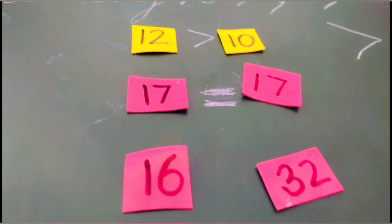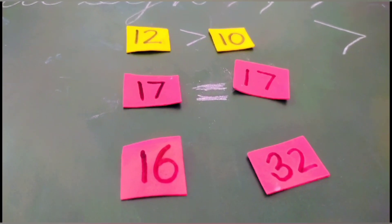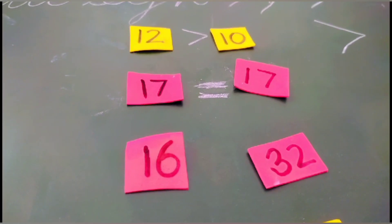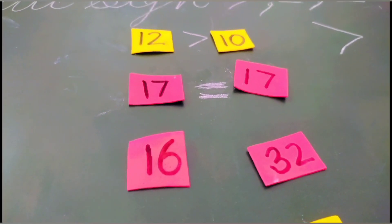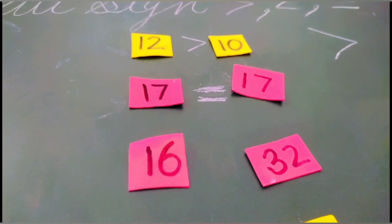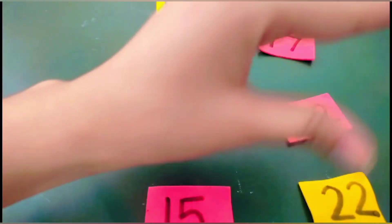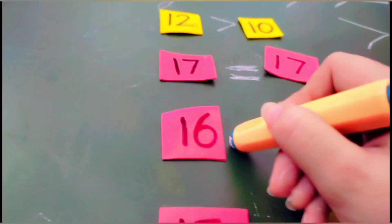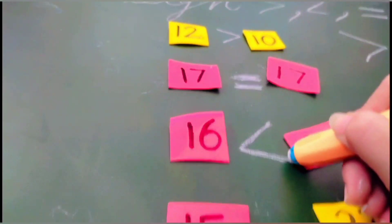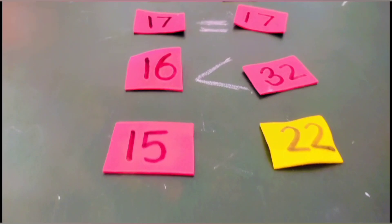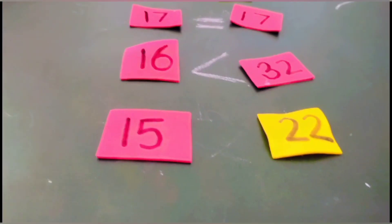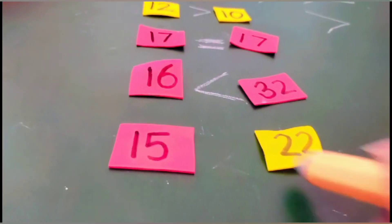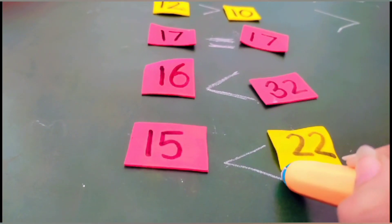Now next we have 16 and 32. 16 and 32. Now we will open our hand on the left side like this. We will make V like this. Next, we have 15, 22. What we will do? Which one is greater? This one is greater. We have to make like this.